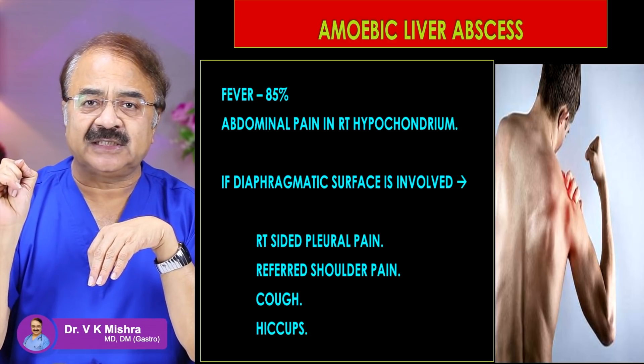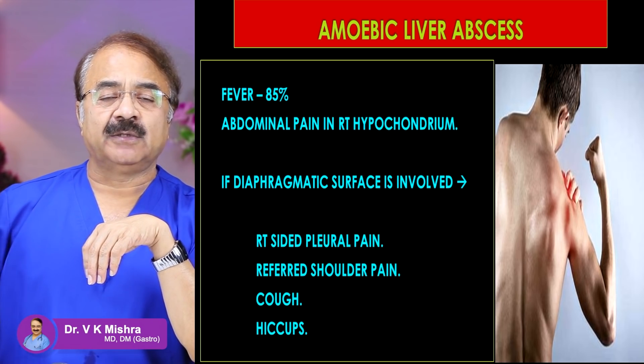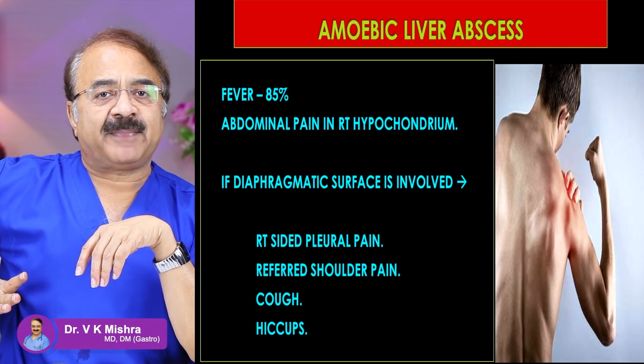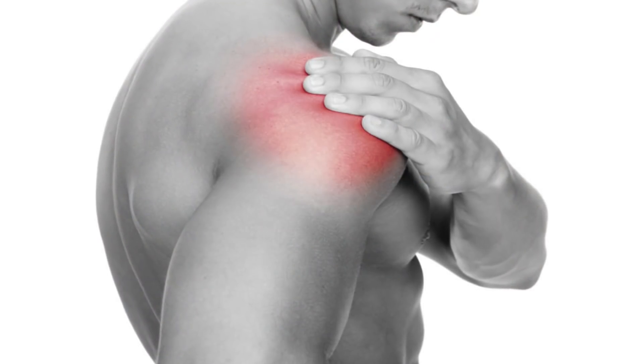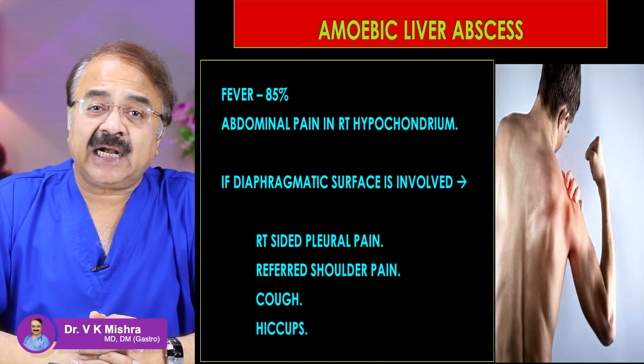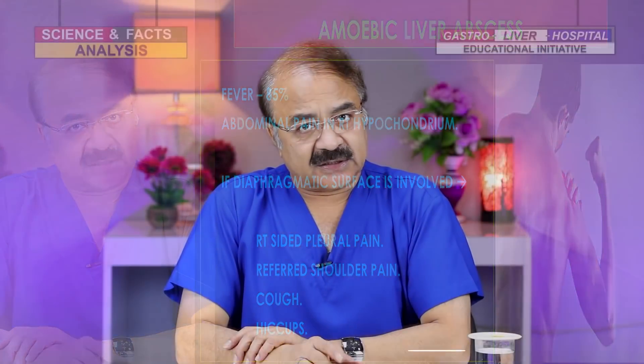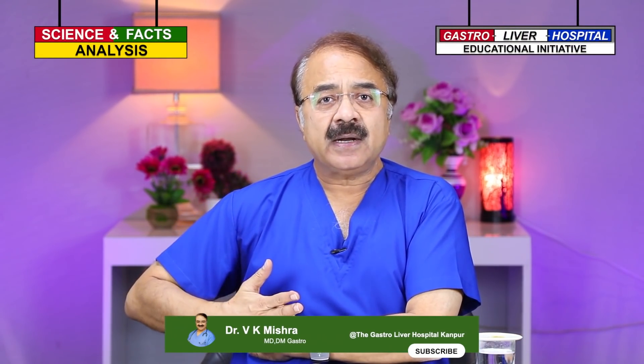If the abscess is irritating the surface of the diaphragm, similar symptoms will appear — right-side pleural pain, pain radiating to the right shoulder, and hiccups. The most important things to understand are: right-side pain, high-grade fever with chills, and if you have been taking alcohol for a long time, the possibility of liver abscess forming is high.